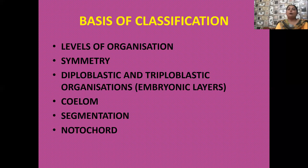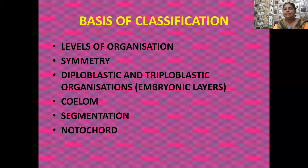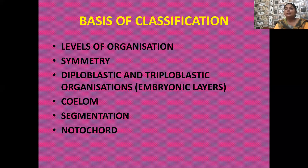To summarize coelom types: coelom is a cavity present between your body wall and the visceral internal organs, surrounded by a mesoderm layer. If the mesoderm layer properly lines the body cavity, such animals are coelomates. If the coelom cavity is absent, animals are acoelomates. If the coelom cavity is partially developed — with mesoderm pouches rather than a proper lining — then such animals are pseudocoelomates.